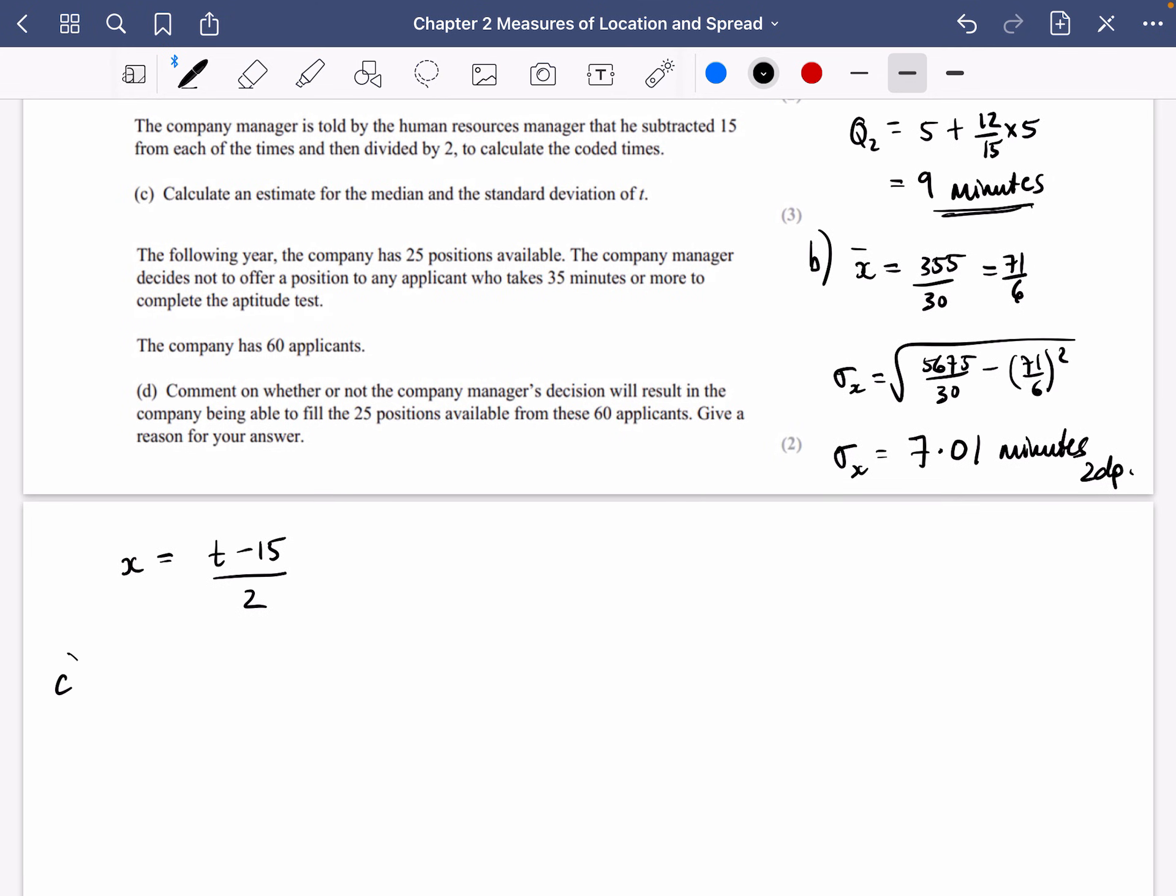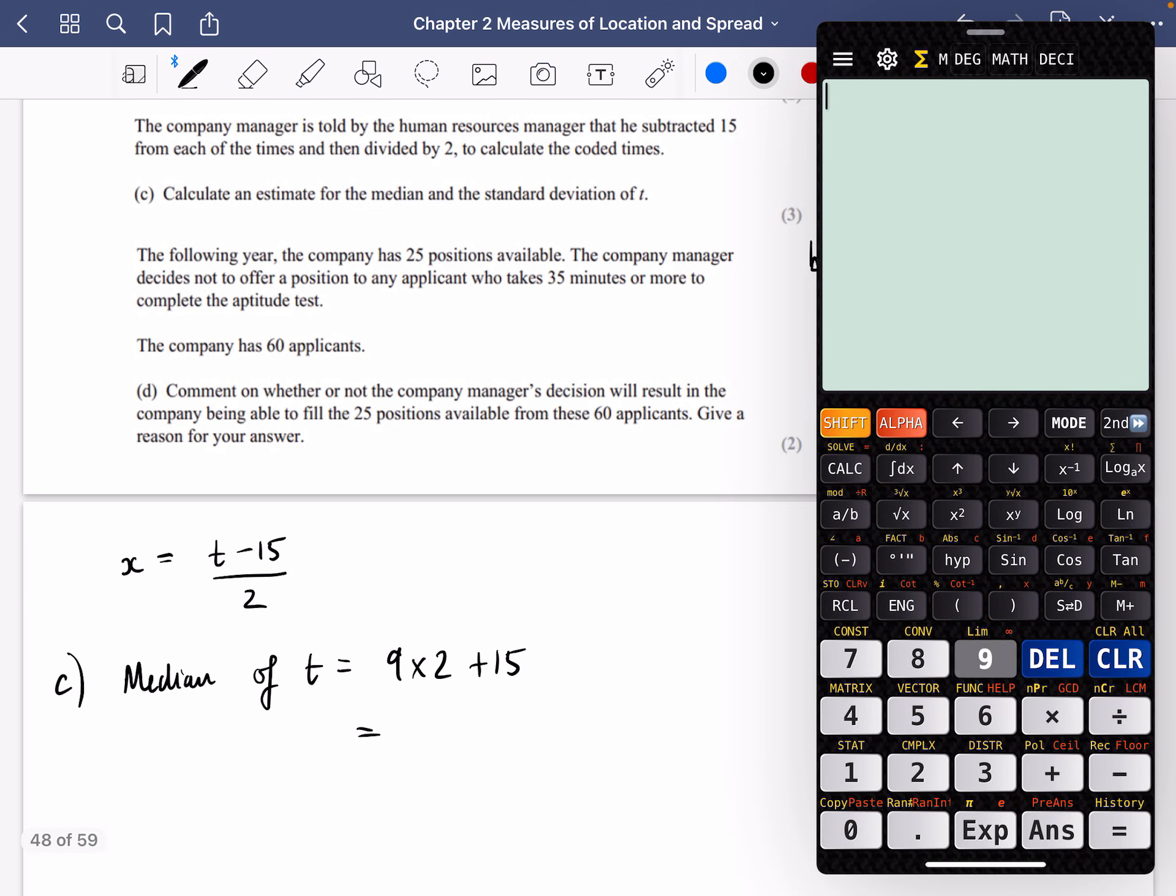So for this part C, to find out what the median is going to be, we're going to double it and add 15. So the median of T is going to be the median of X. We're going to double it and then we're going to add 15. So that's 18 plus 15. So which is 33 minutes.